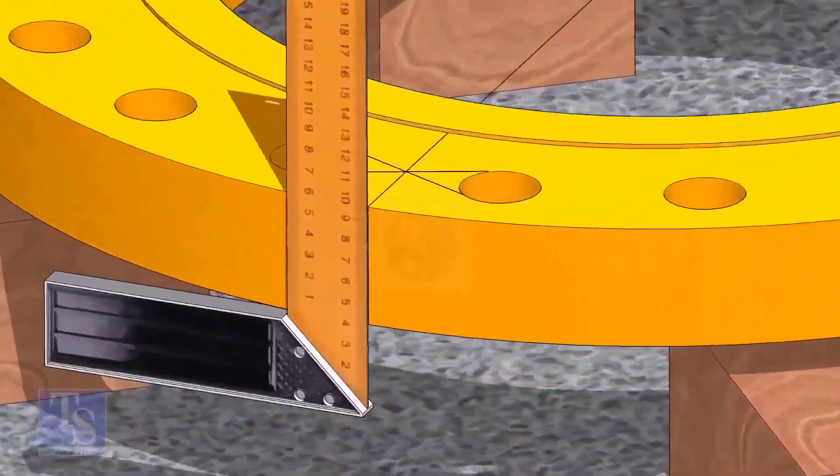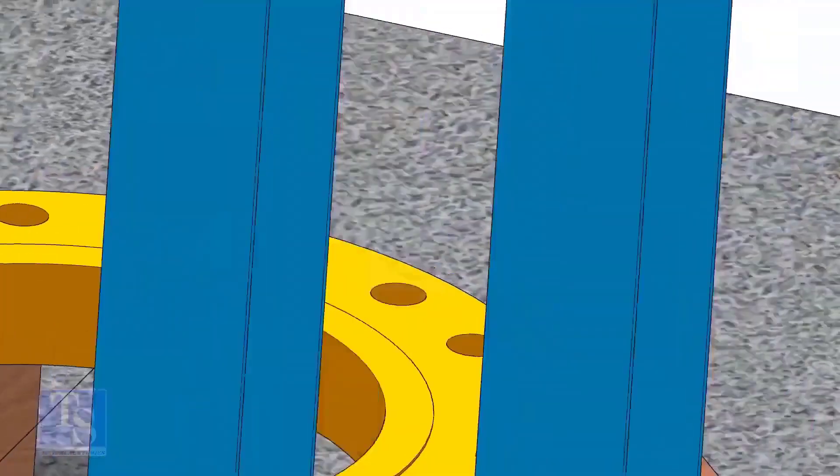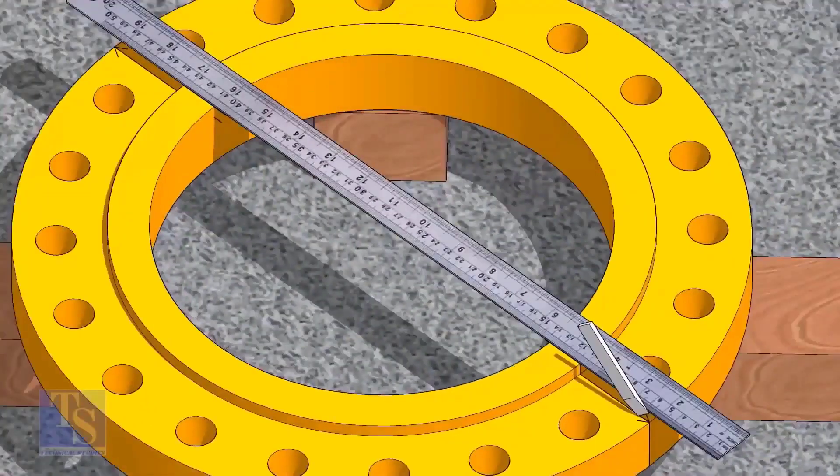Now draw the center line of the flange as shown. Transfer the center line to the sides of the flange. Overturn the flange and transfer the center line on the back side of the flange.